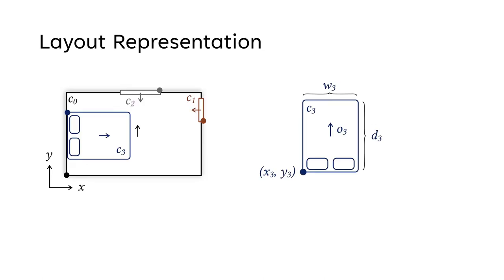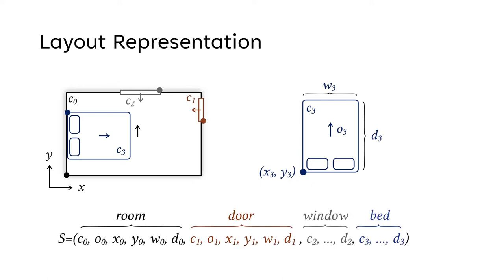Transformers operate on sequences of discrete values. Therefore, scenes are represented as sequences of tokens. For each object in the scene, the category, orientation, position and dimensions are stored.